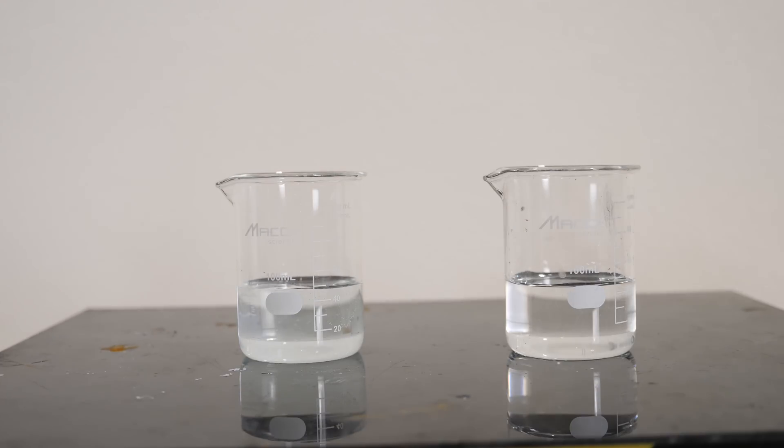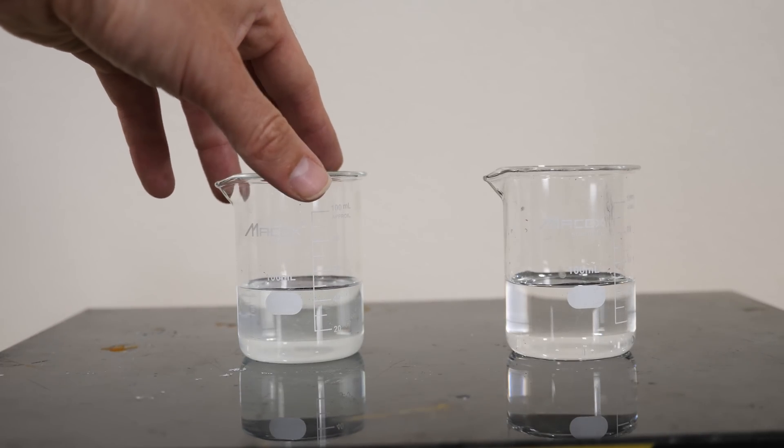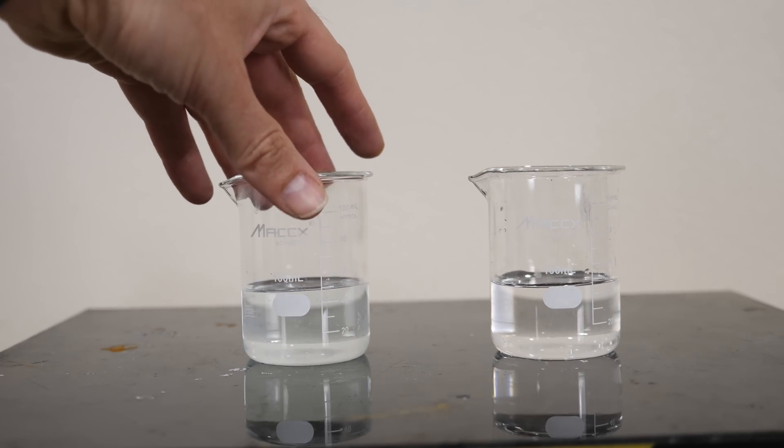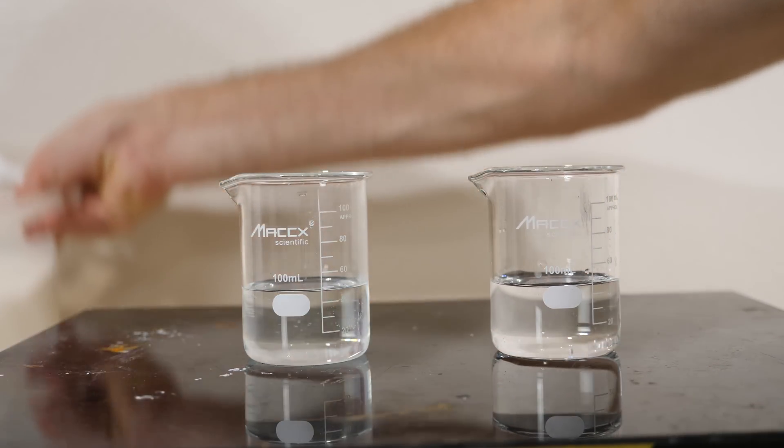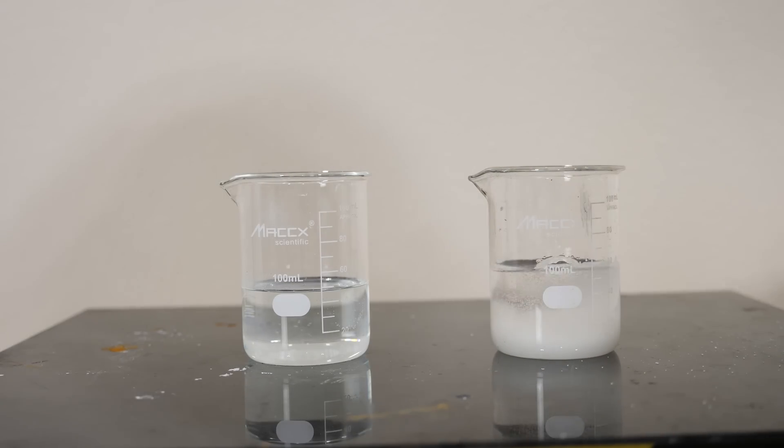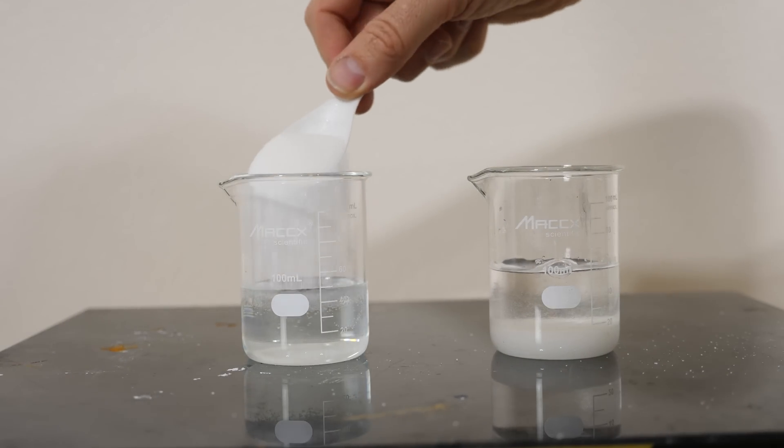We know that when you want to dissolve something, it helps to heat it up. The one on the left is hot water and the one on the right is cold water. Let's see what happens when I put a spoonful of sugar in each of these. Just two spoonfuls in each of them.